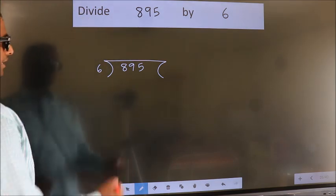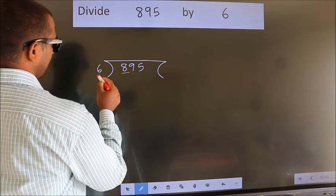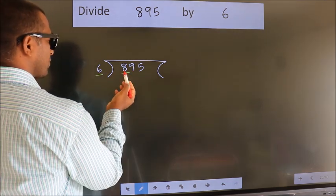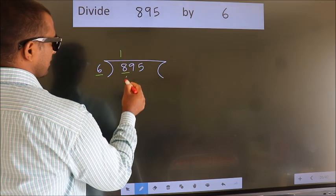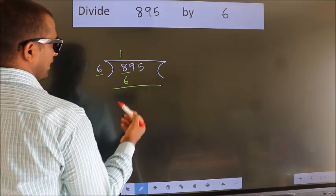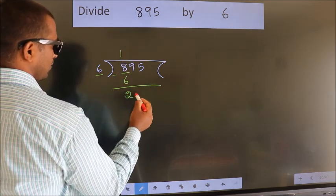Next, here we have 8, here 6. A number close to 8 in the 6 table is 6 times 1 equals 6. Now we should subtract. We get 2.